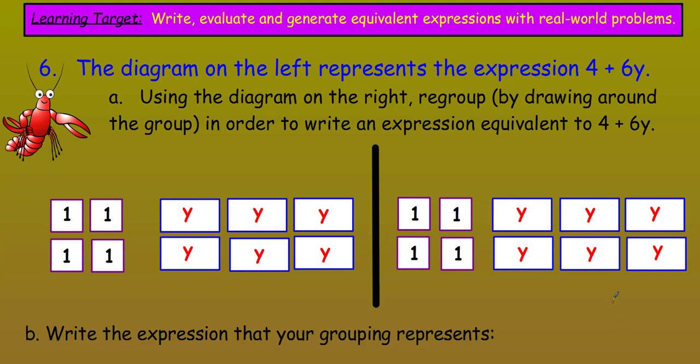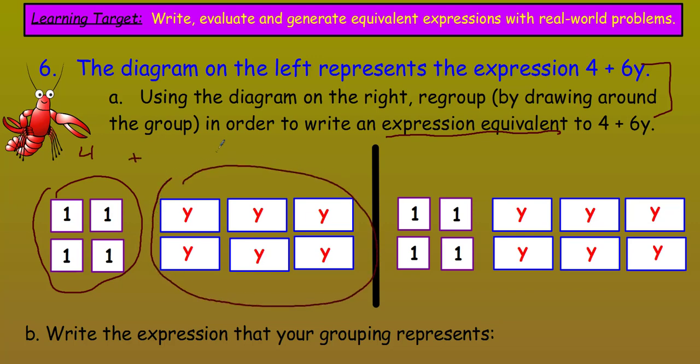Number six. Says the diagram on the left represents the expression four plus six Y. Using the diagram on the right, regroup by drawing around the group in order to write an expression equivalent to four plus six Y. Which you can see these two are like the same right there. And actually the diagrams look exactly the same. So what we're basically needing to do here is show through drawing each expression and how they're equivalent to each other. Well, when I look at four plus six Y, I can't help but see almost immediately that the four here and the six, they both have a common factor.